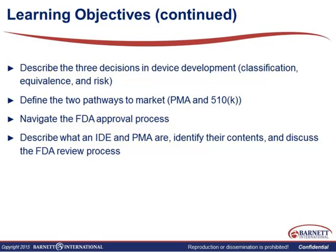When we do this, we're going to describe three decision-making pieces that we have to make in the U.S. for device development: what classification does the device fall under, is it equivalent to something else, and what kind of risk would be involved in that device? Those are the key parameters for how we proceed to test a medical device. And then we have two pathways to market — do we approach the FDA with a PMA, pre-market approval, or a 510(k), which is a pre-market notification?